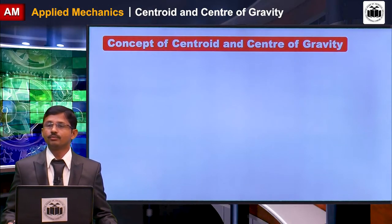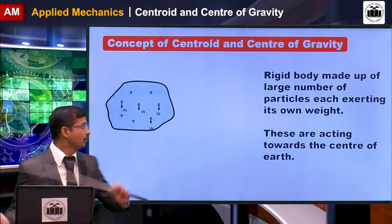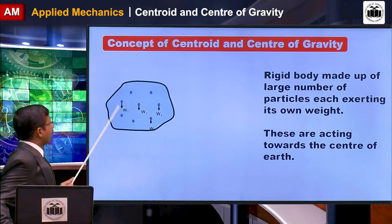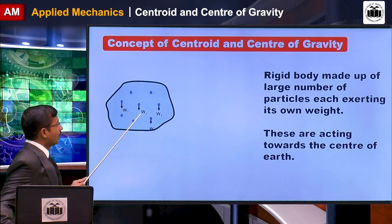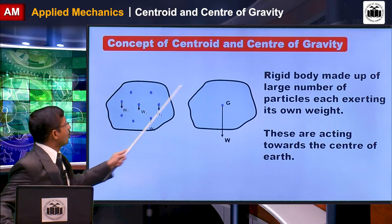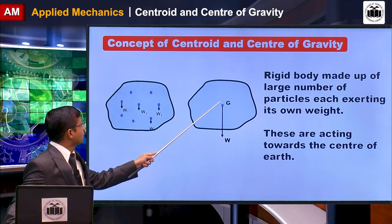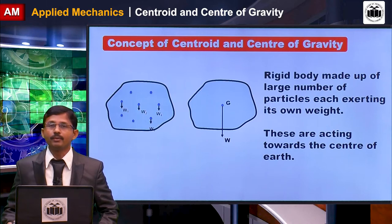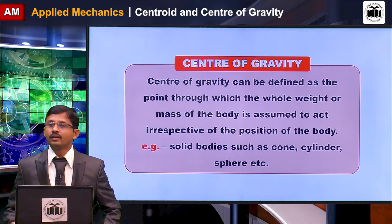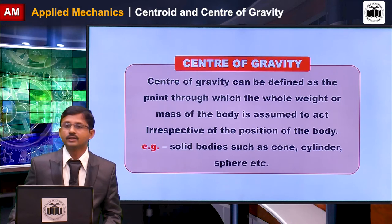Now we will discuss the concept of centroid and center of gravity. If you consider an irregularly shaped lamina having a number of particles exerting their own weight, these weights act towards the center of the earth. If you calculate the resultant of all these particles, you will get a point where the resultant of all the weights is concentrated. That point is called the center of gravity of that particular irregular shaped lamina. We can define the center of gravity as the point through which the whole weight or mass of the body is assumed to act, irrespective of the position of the body.